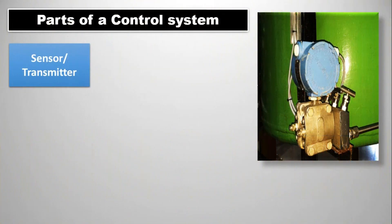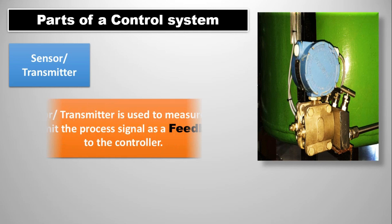Another part is sensor or transmitter. Sensor or transmitter is used to measure and transmit the process signal. The process signal is transmitted as a feedback to the controller.